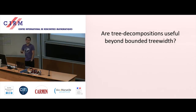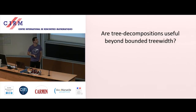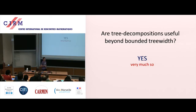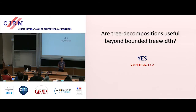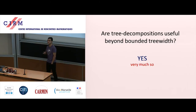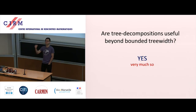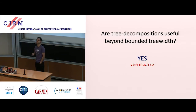You might ask: we've spent all this time setting up the notation for tree decompositions, and it turns out it's only useful for a relatively small subset of graphs. It's a very cool subset, but a relatively small one. So the question is, are these notions useful beyond bounded tree width? And the answer is, of course, yes, very much so.